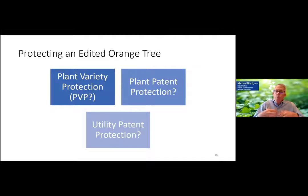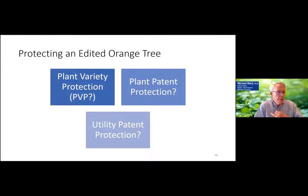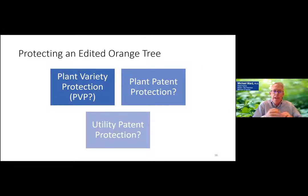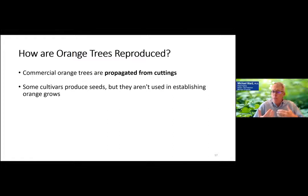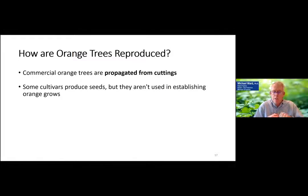To protect our edited orange tree: plant variety protection used to not be available in the US for orange trees, but they are available now. Orange trees reproduce by cuttings — they don't reproduce by seed. It used to be that you had to reproduce by seed in order to get PVP protection. But with the change in the law, we can now protect things that reproduce by cuttings, such as orange trees, under PVP.